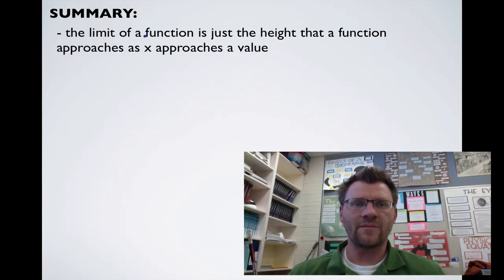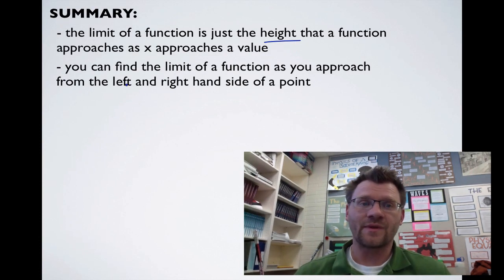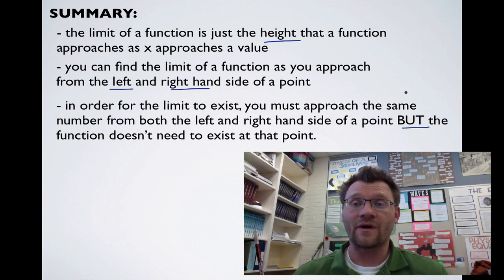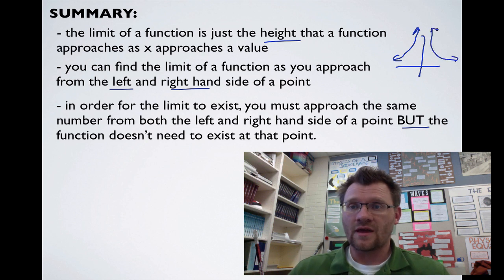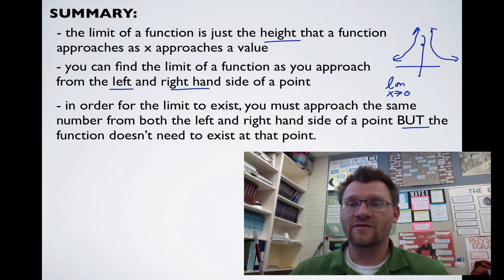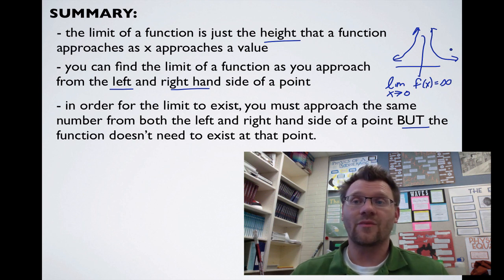In summary, the limit of a function is the height that function approaches as x approaches a specific value. You find the limit by approaching from both the left and right-hand side, and you must do so for the limit to exist. In order for the limit to exist, it must approach the same height from both sides. The function doesn't need to exist at that point — it could be a hole or a vertical asymptote. For example, if your function has a vertical asymptote at x = 0, approaching from both sides goes to infinity, so the limit would be infinity.